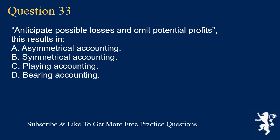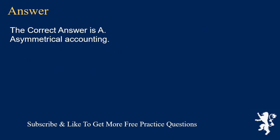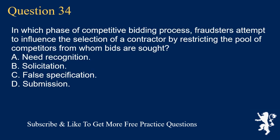Question 33: Anticipate possible losses and omit potential profits — this results in: A. Asymmetrical accounting. B. Symmetrical accounting. C. Playing accounting. D. Bearing accounting. The correct answer is A. Asymmetrical accounting.